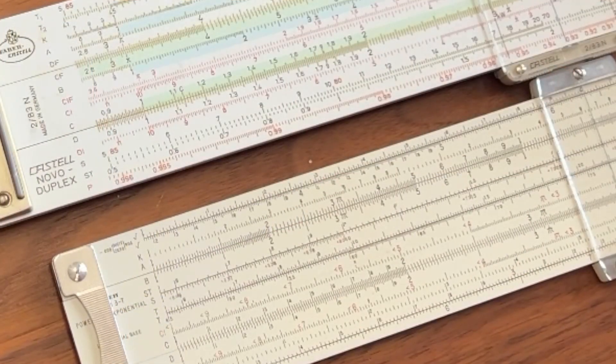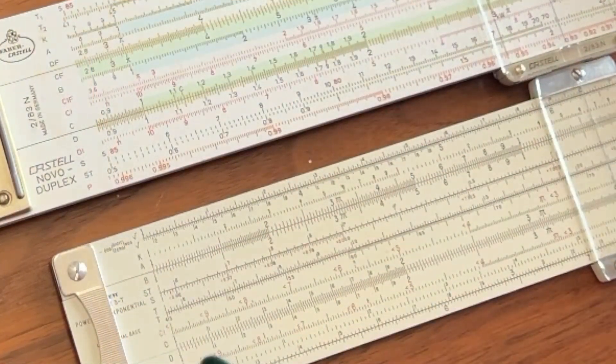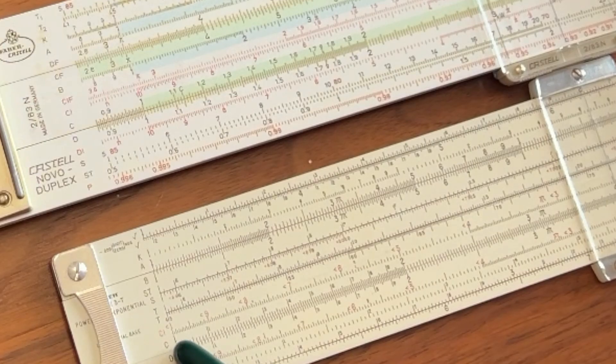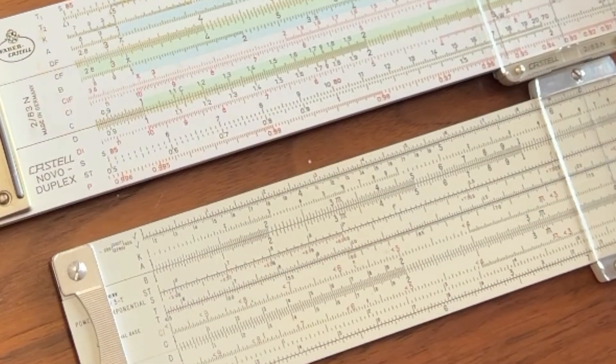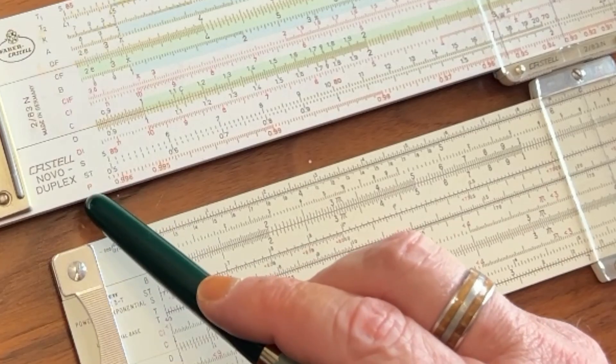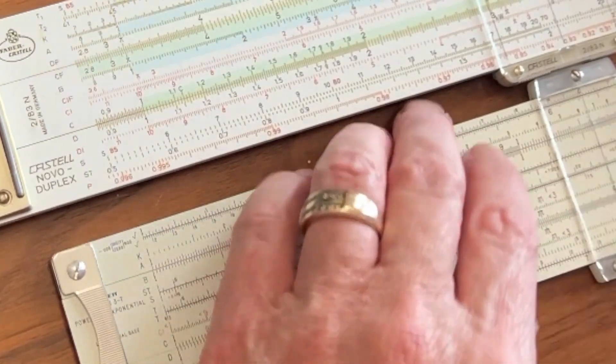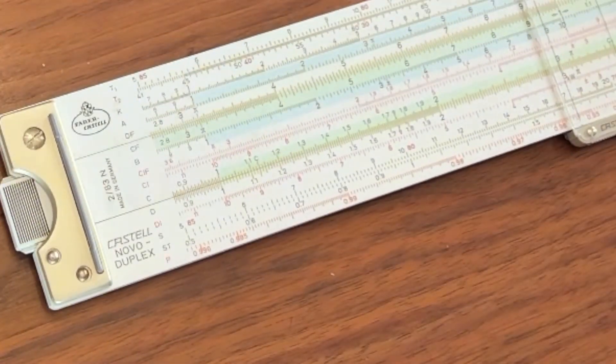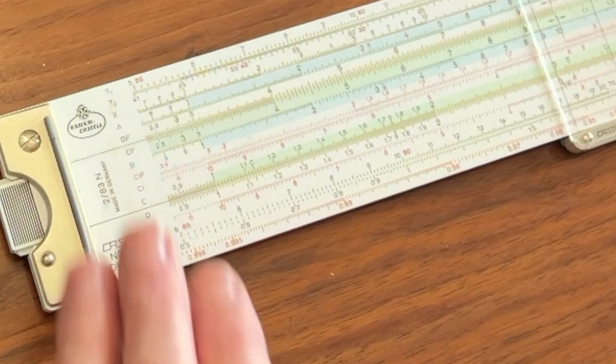Now by now you're relatively familiar with the trigonometric scales. On the Pickett N3, they are on the slide. On the Faber-Castell 283, they're actually on the body of the slide, and there's an extra one here called a P-scale. But let's go ahead and just have a quick look at this and see how they're built and why.